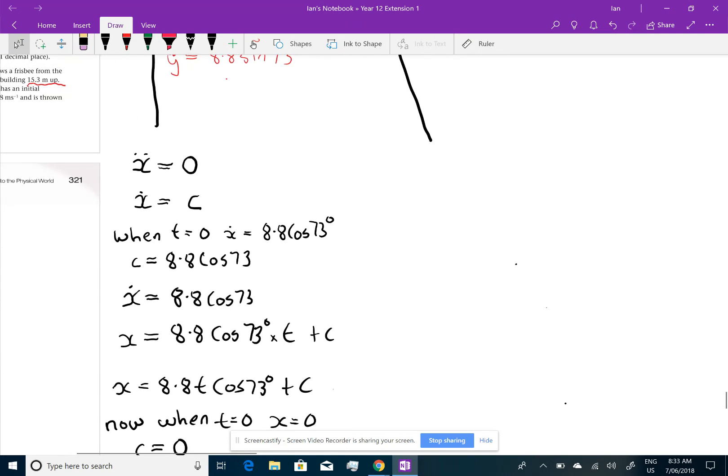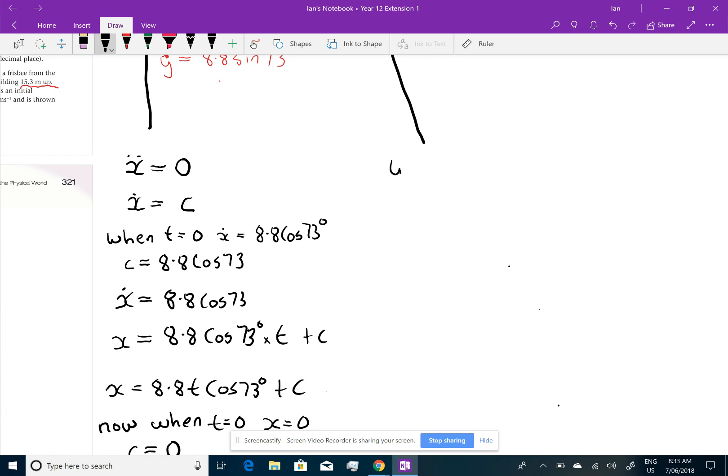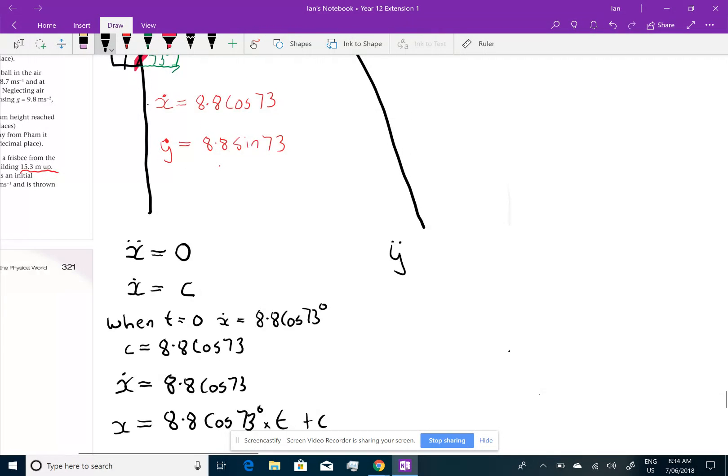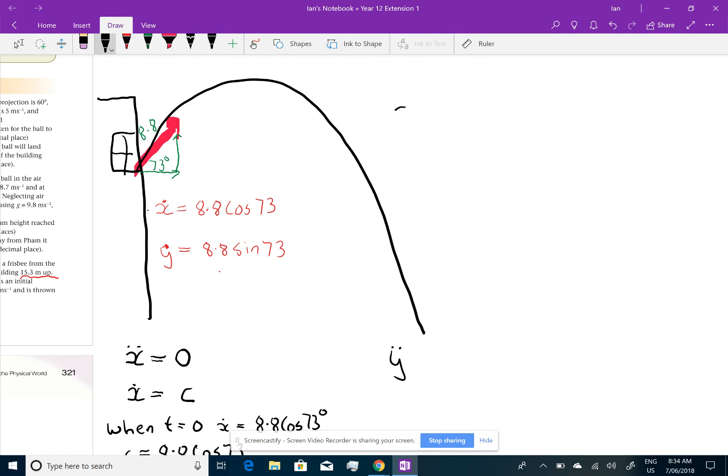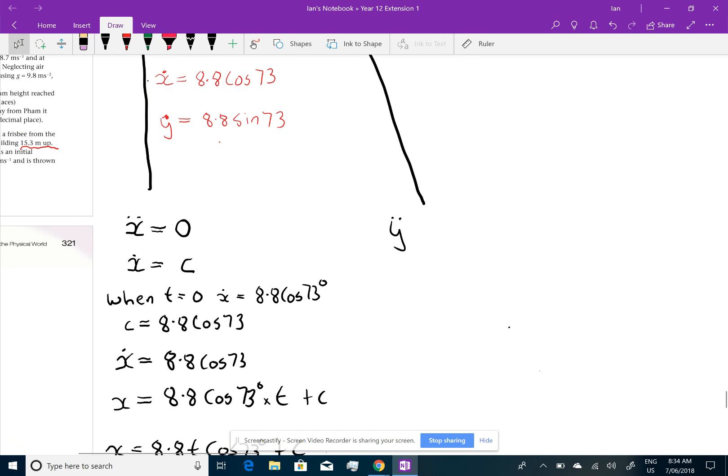Let's work on the vertical. Well, they told us to take gravity equal to 10 metres per second, and it's coming back towards Earth, so we use a negative. So, y double dash is negative 10.